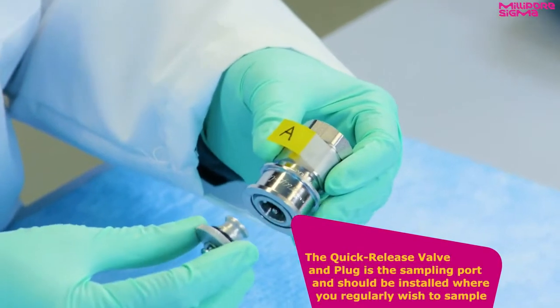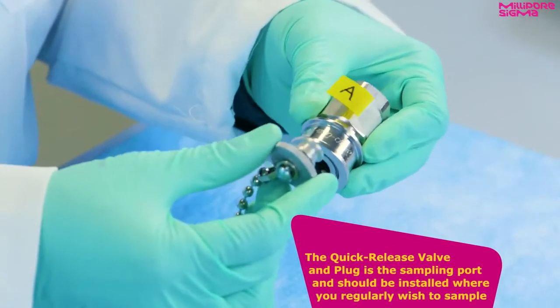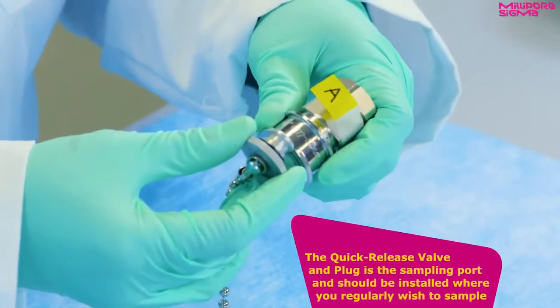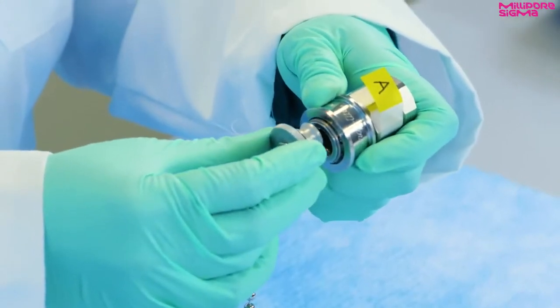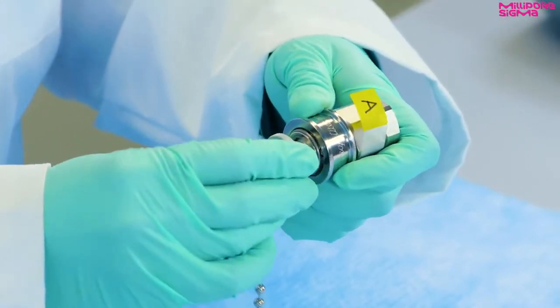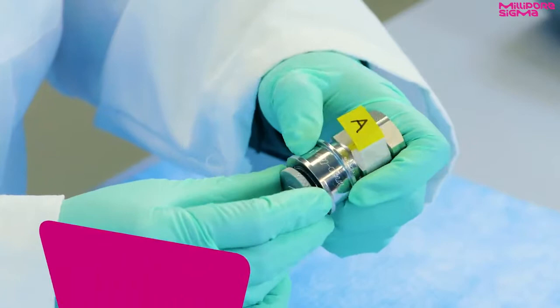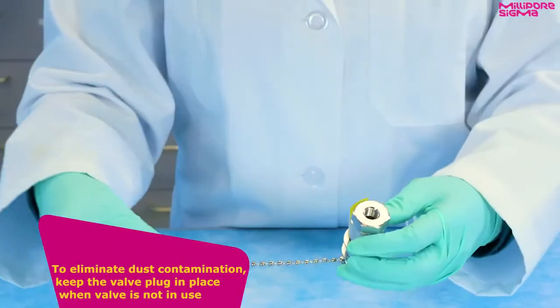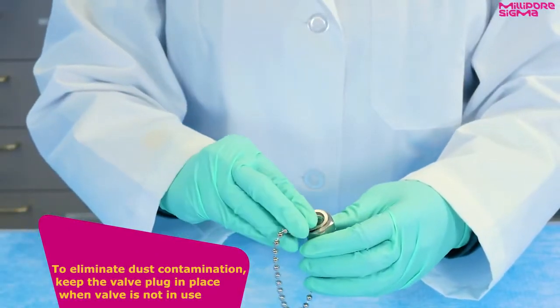The quick-release valve and plug is the sampling port and should be installed where you regularly wish to sample. This valve will not allow liquid to flow until it is engaged with the sampler assembly during sampling. To eliminate dust contamination, keep the valve plug in place when the valve is not in use.